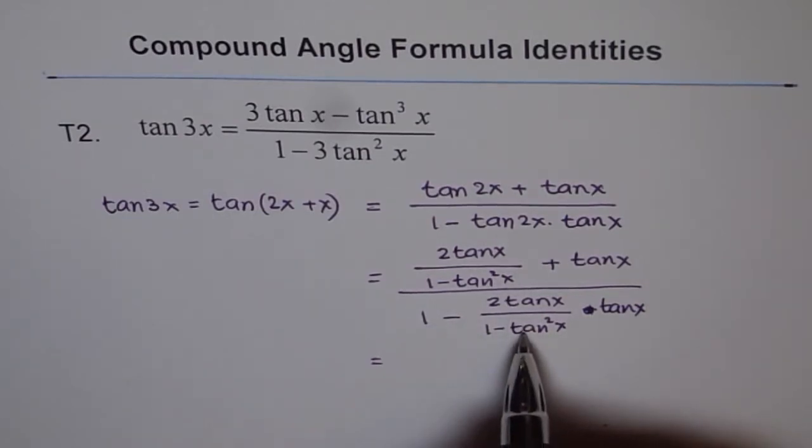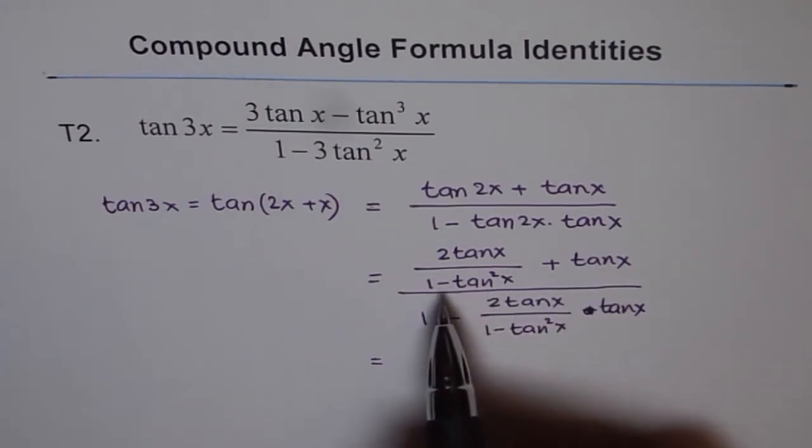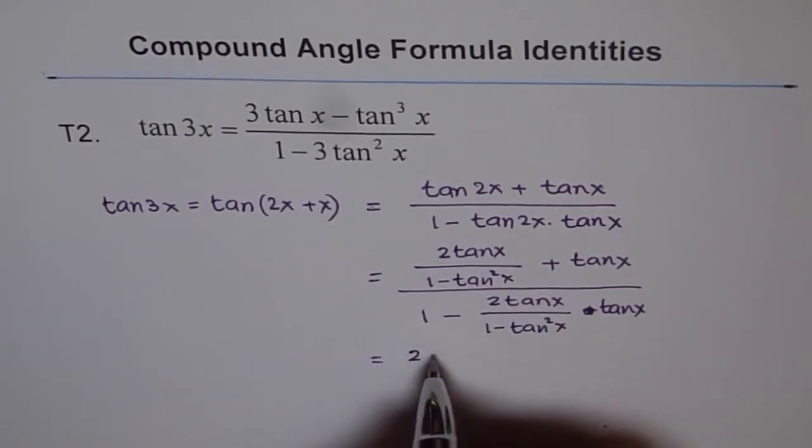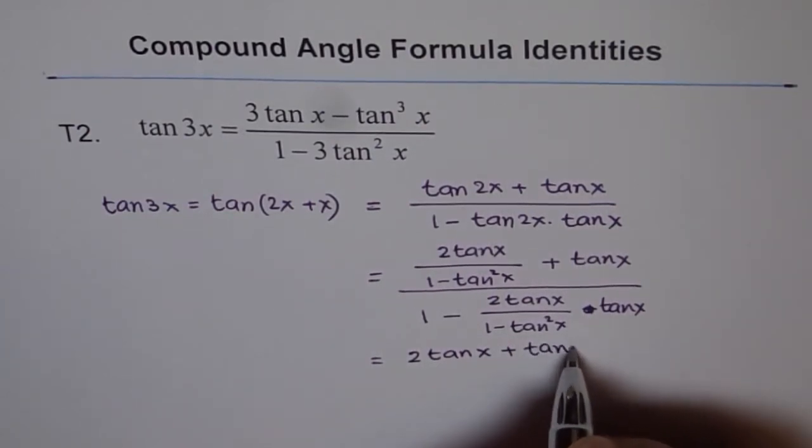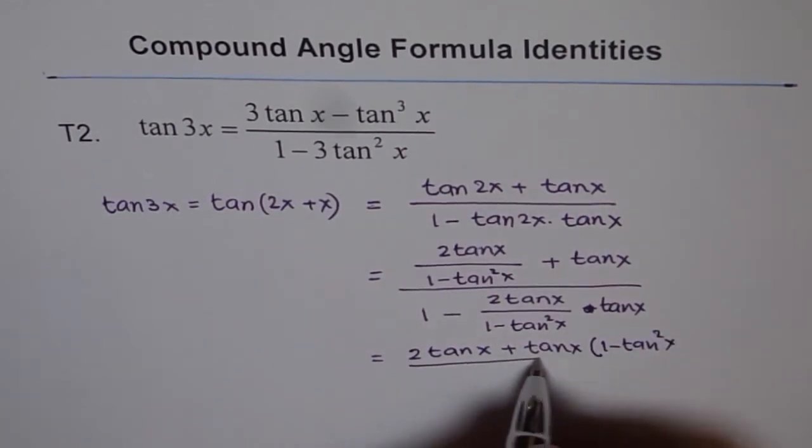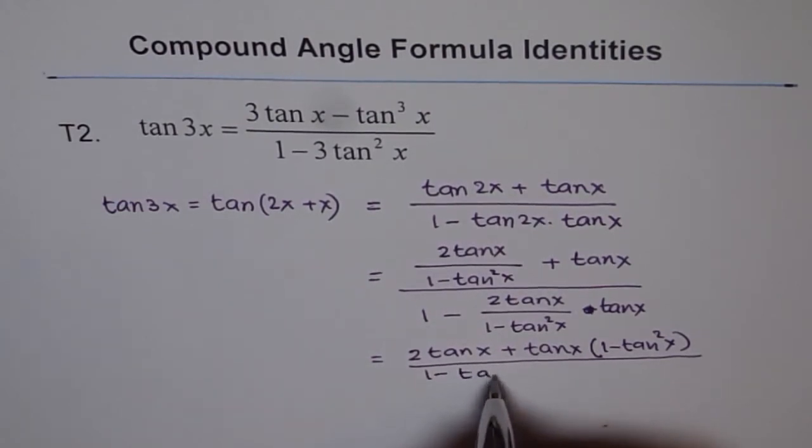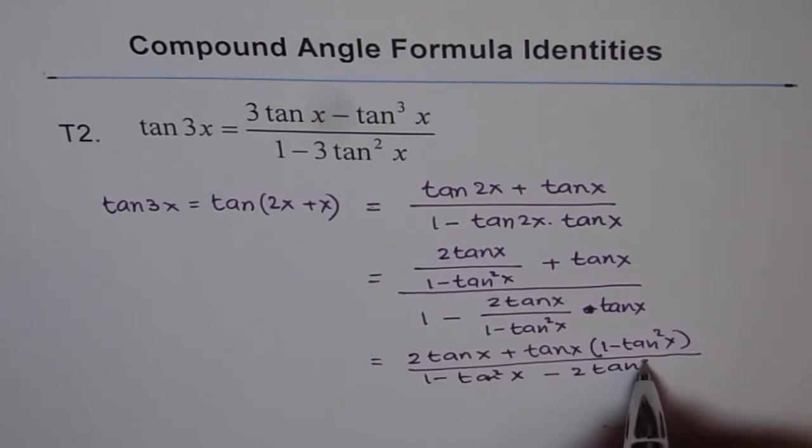And then this gets multiplied by 1 minus tan squared x. In the numerator, tan x gets multiplied by 1 minus tan squared x. So we can write this as 2 tan x plus tan x times 1 minus tan squared x, over 1 minus tan squared x minus 2 tan squared x.